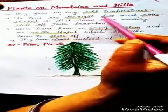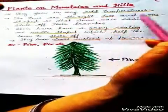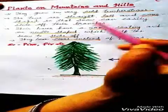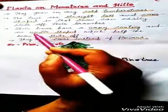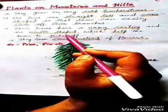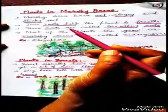To summarize: mountain and hill plants grow in cold areas. Their trees are straight, tall and cone-shaped. Their leaves have a waxy coating and are needle-shaped.